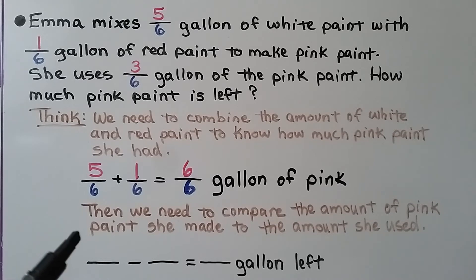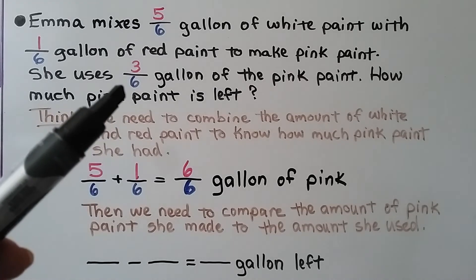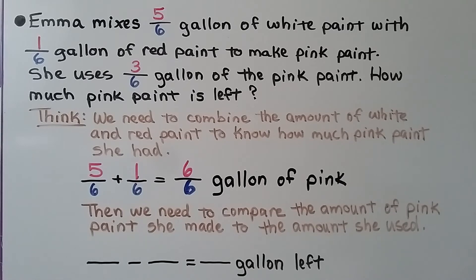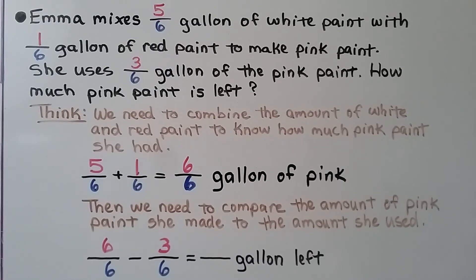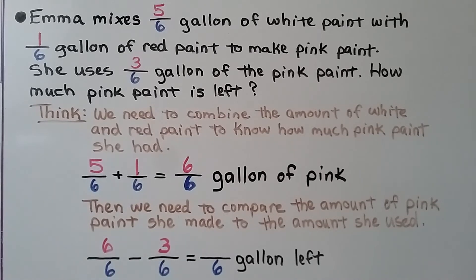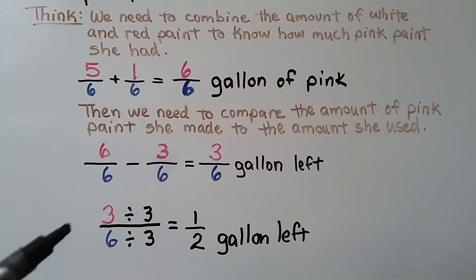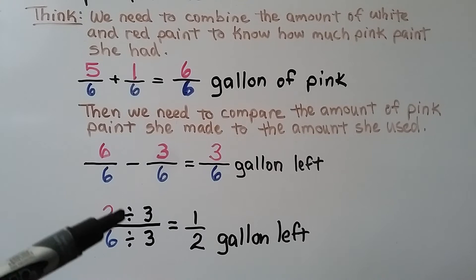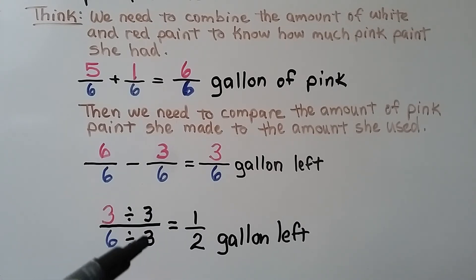Then we compare the amount of pink paint she made to the amount she used. She used three-sixths, so we write six-sixths minus three-sixths. Same denominator, so our difference has a six for a denominator. Six minus three equals three, so she has three-sixths of a gallon left. We can write this in simplest form: three and six share a common factor of three. Three divided by three equals one, and six divided by three equals two — she has one-half gallon of pink paint left.